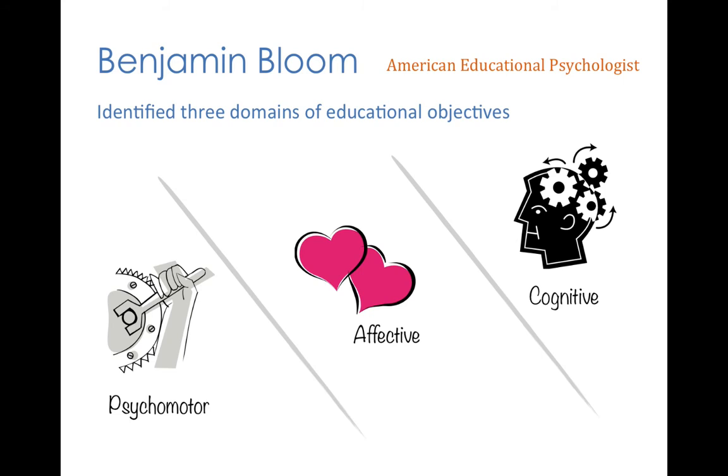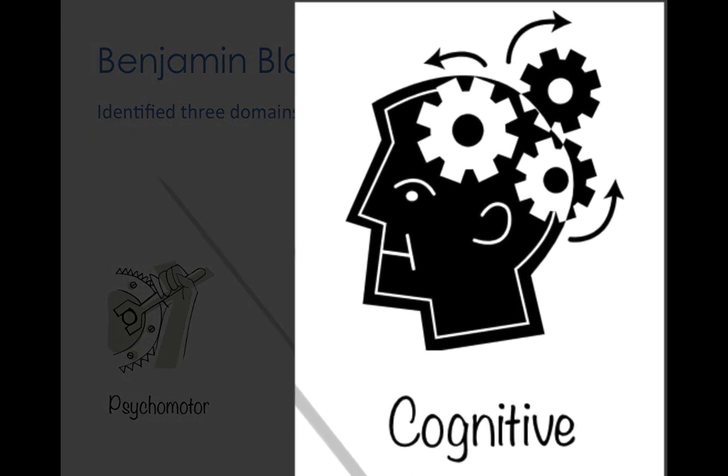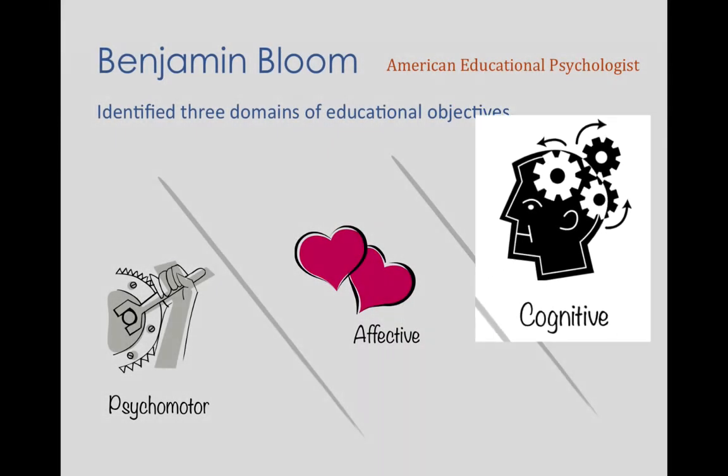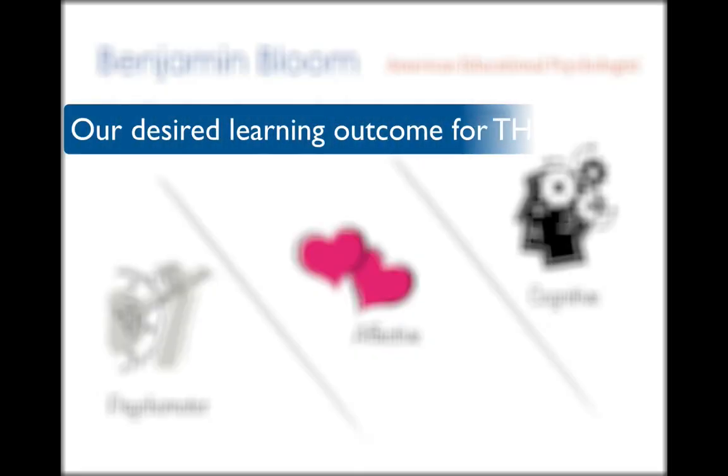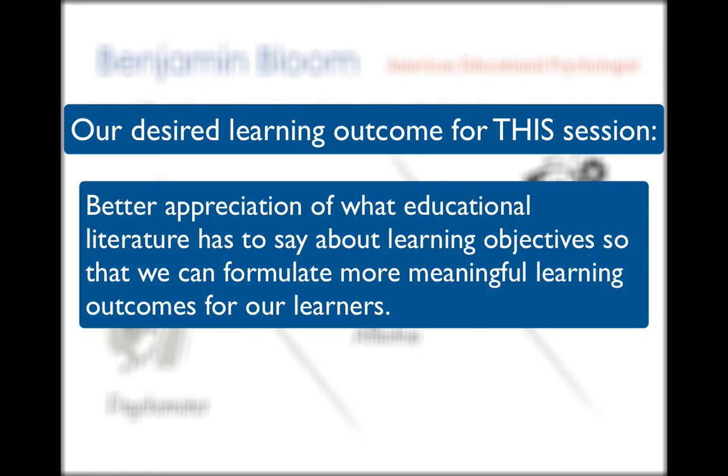Or our learning objective could be learning a cognitive or a mental skill for which Bloom has further defined six levels we just looked at. And furthermore, in this session, our desired learning outcome is that we are aiming for better appreciation of what educational literature has to say about different types of learning objectives, so that we are better equipped to frame more meaningful learning outcomes for our target learners.